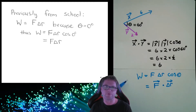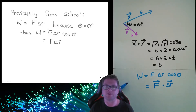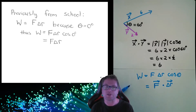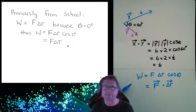Previously in school you may have used the simpler definition: work equals F times displacement, without the cos theta term. This was because only simple cases were considered where force and displacement are in the same direction. In that case theta is zero and cos(0) is one. But at university we deal with more complicated situations, so we always need to include the cos theta term.